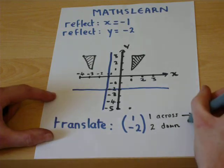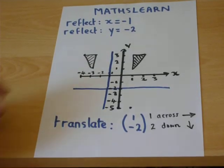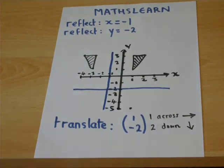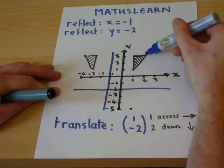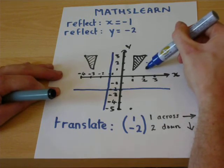If it was a plus 2, it would be 2 up. So our shape is moving 1 across and 2 down. So we go through each coordinate in turn. Here's the first coordinate we'll set. 1 across, 2 down.